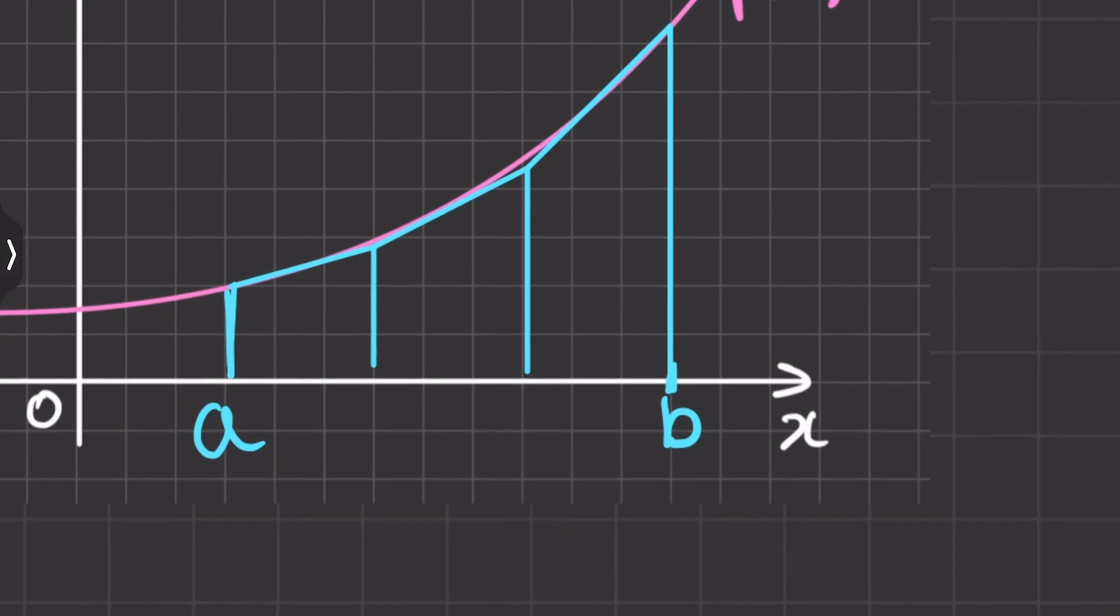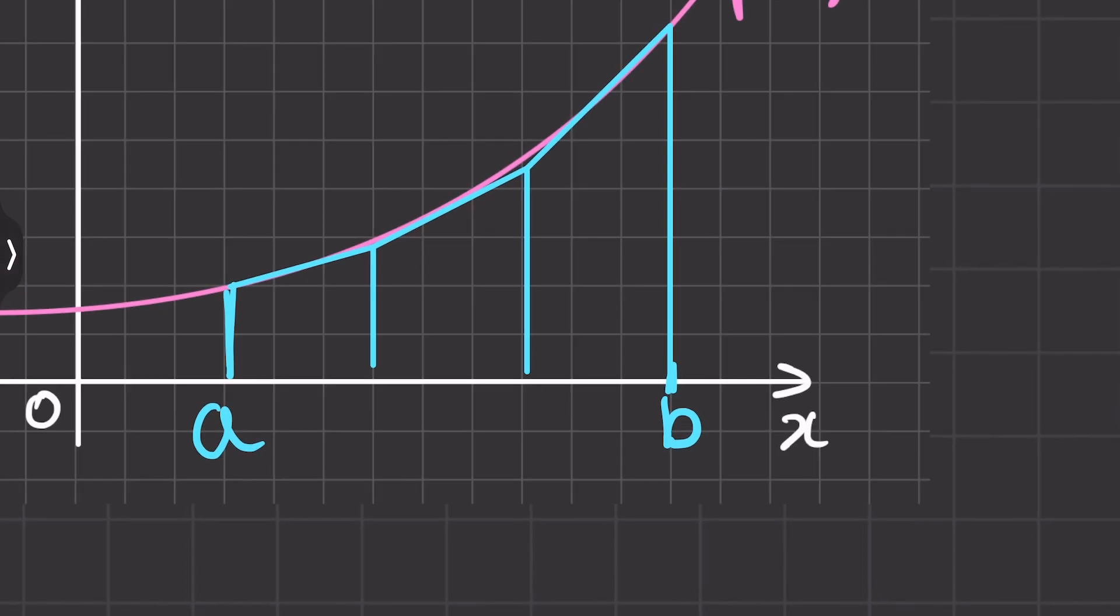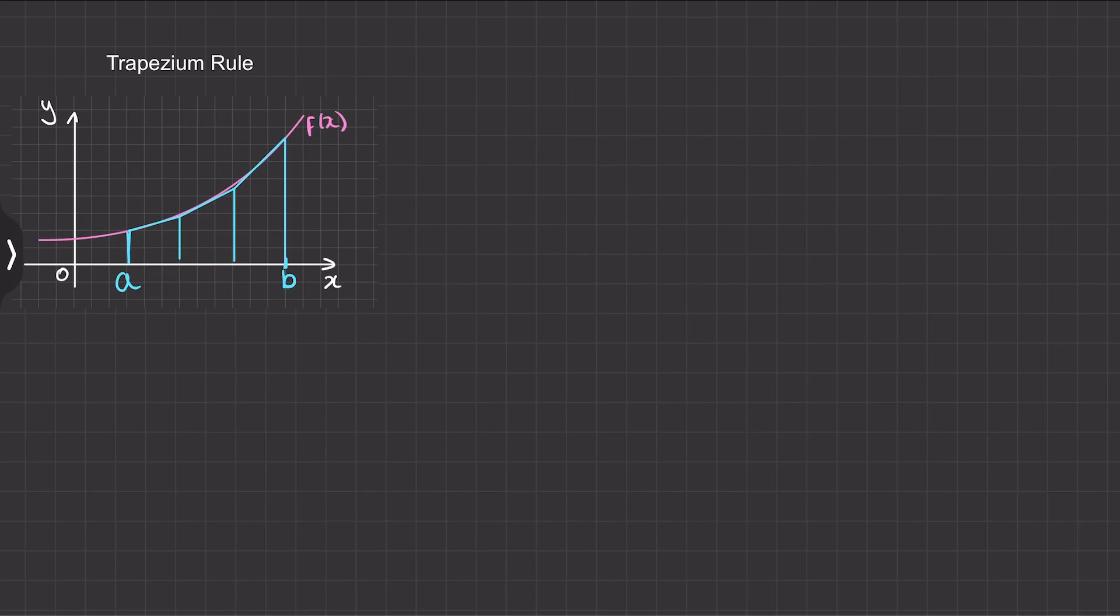It's an approximation because as you can see we're trying to match a line onto a curve. So in some parts will be over the curve and in other parts will be below the curve. So it is an approximation. We can make the approximation more accurate by using more narrow strips, but for now we'll stay with what we've got.